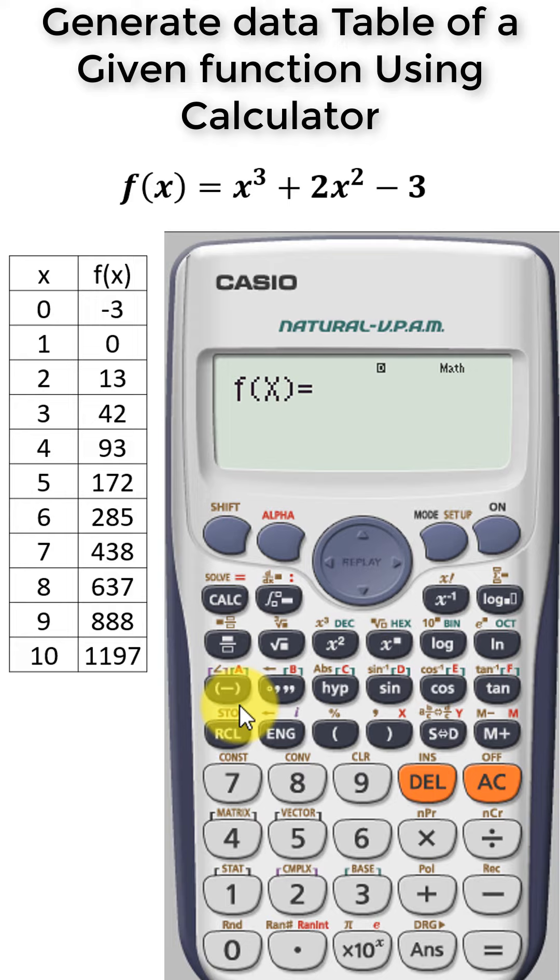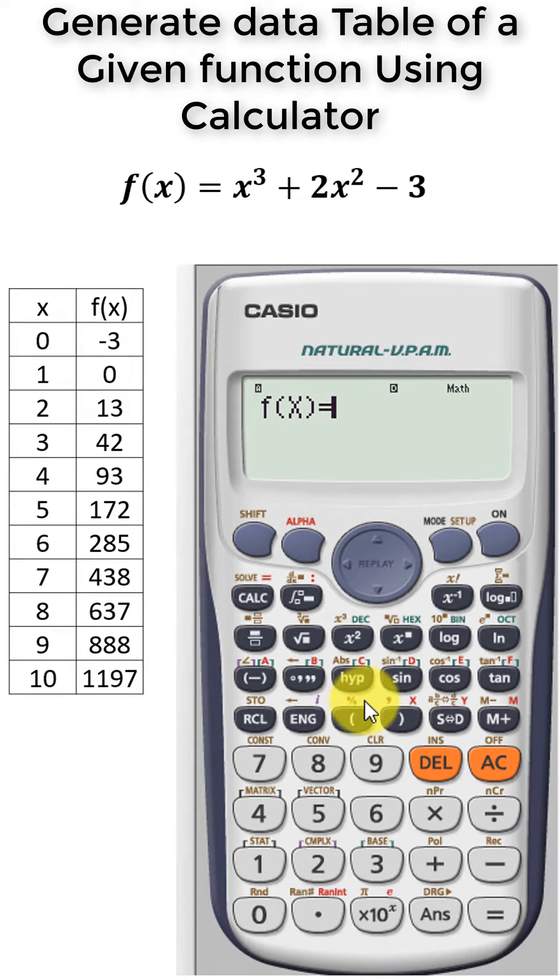It says that enter the f of x function so we will enter this f of x function. Alpha x, then shift, this cubed, plus two, alpha x squared, and now to the power two, minus three.